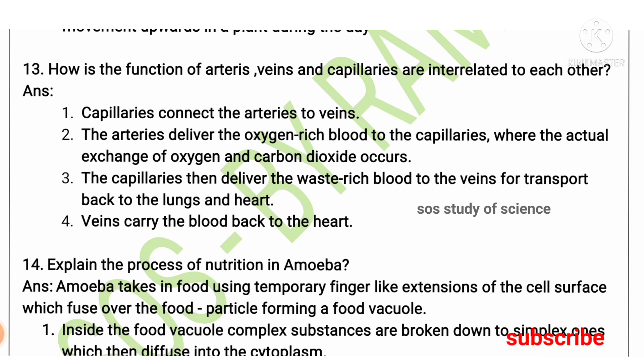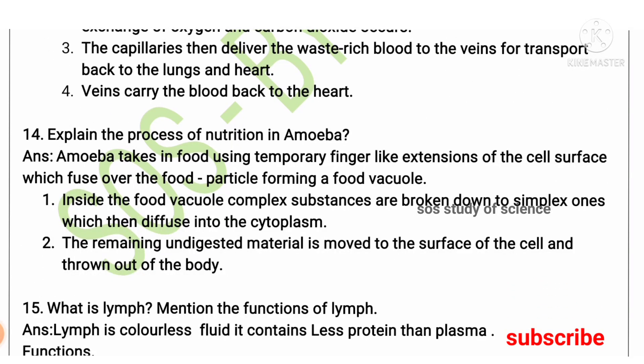Next question: how are the functions of arteries, veins, and capillaries interrelated? Capillaries are the thinnest blood vessels, connected to both arteries and veins. Arteries deliver oxygen-rich blood into capillaries, which then deliver it to cells. Carbon dioxide released by cells is carried by capillaries and delivered as waste-rich blood to the veins, which transport it to the lungs and back to the heart, from where it is directed for excretion.